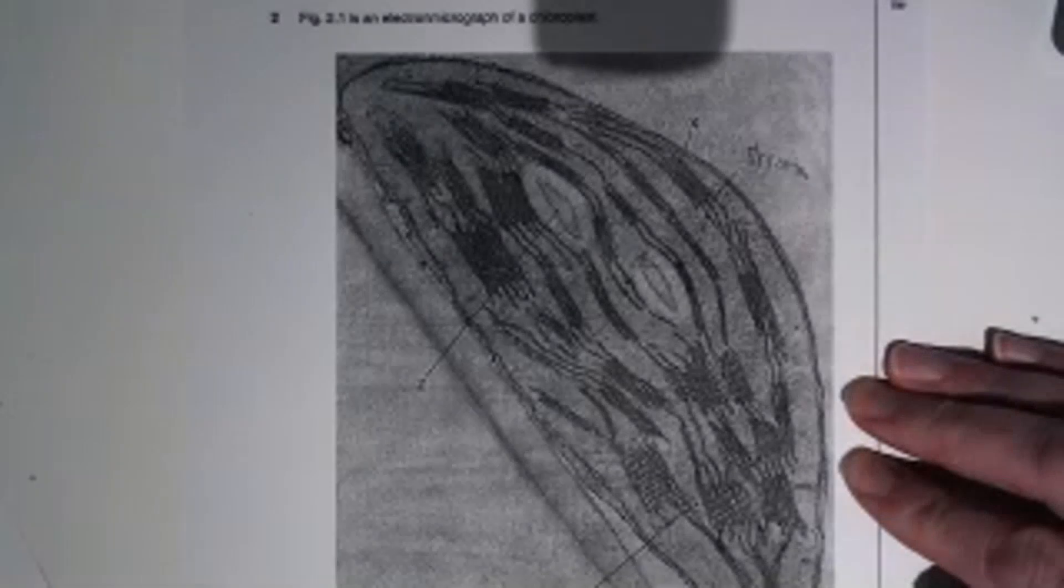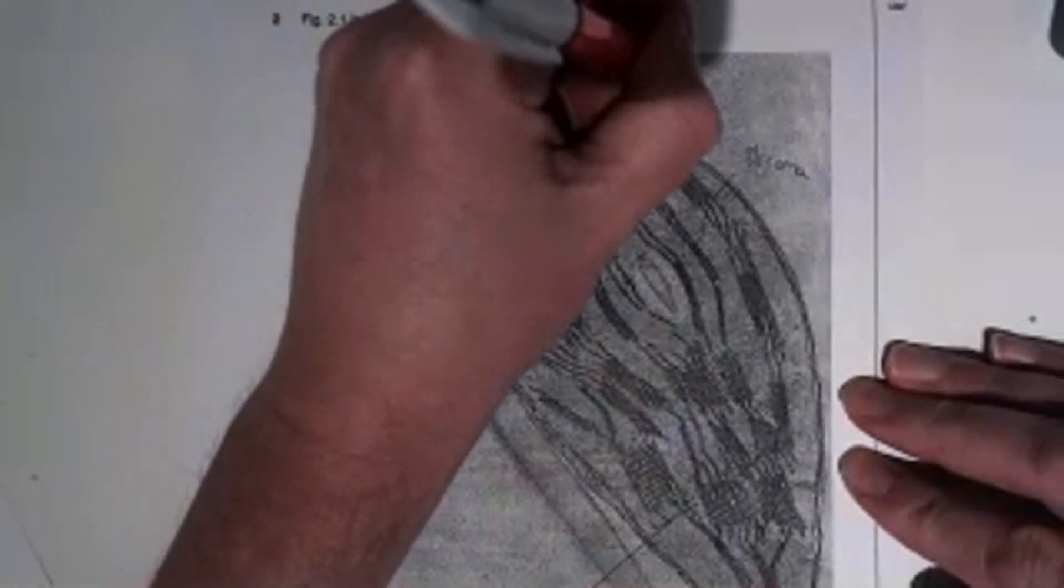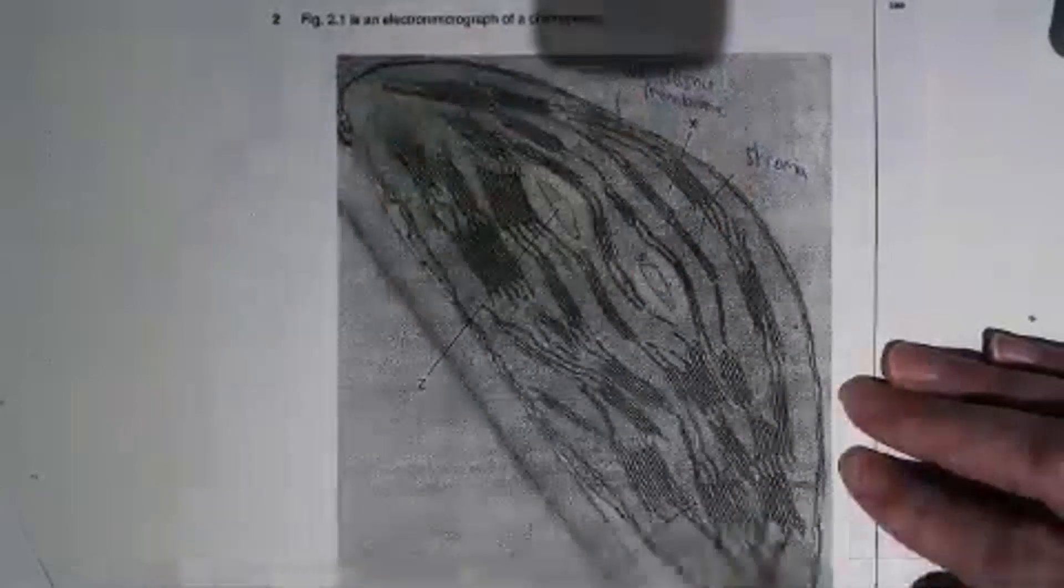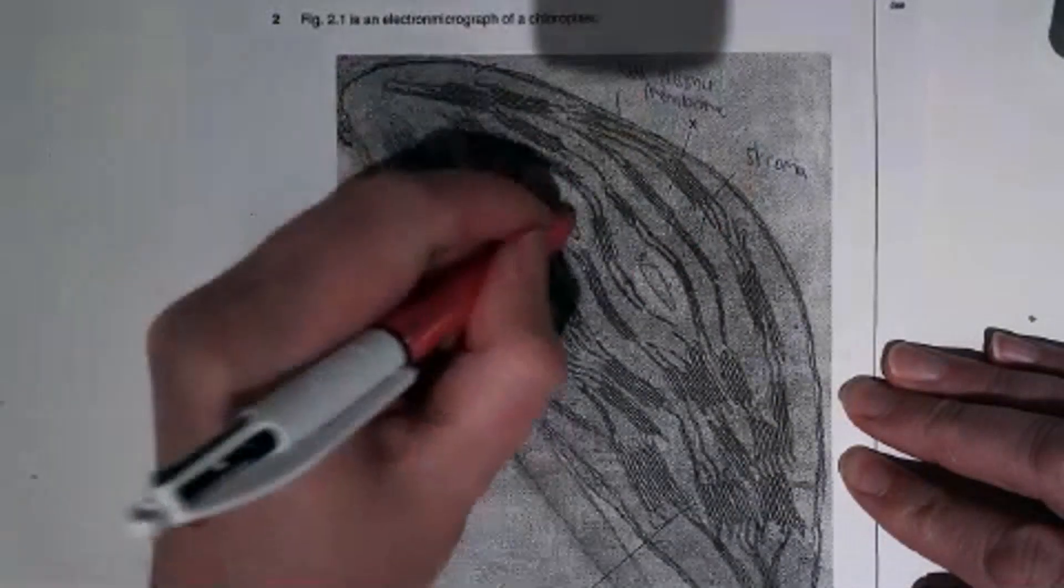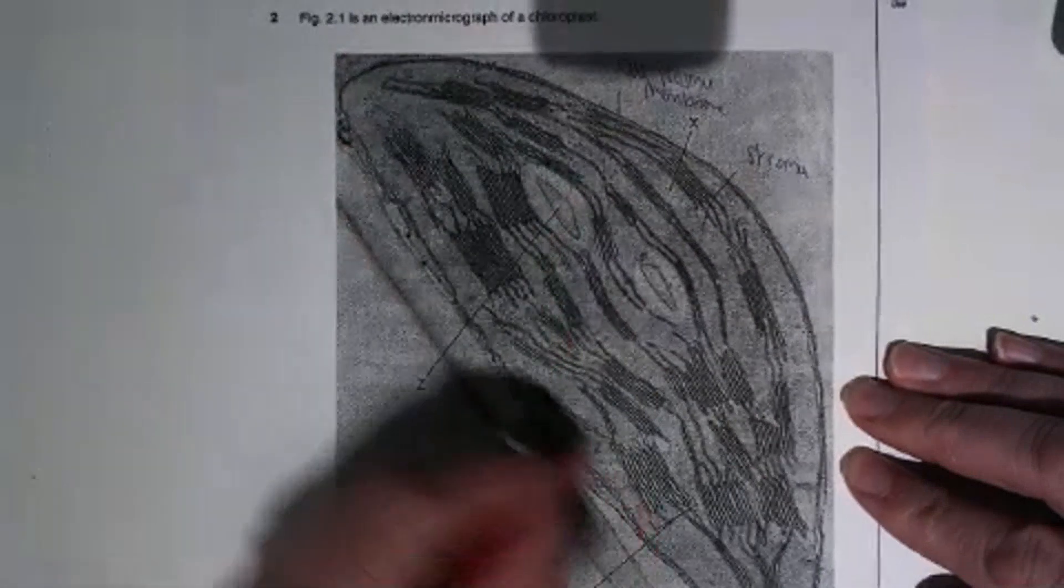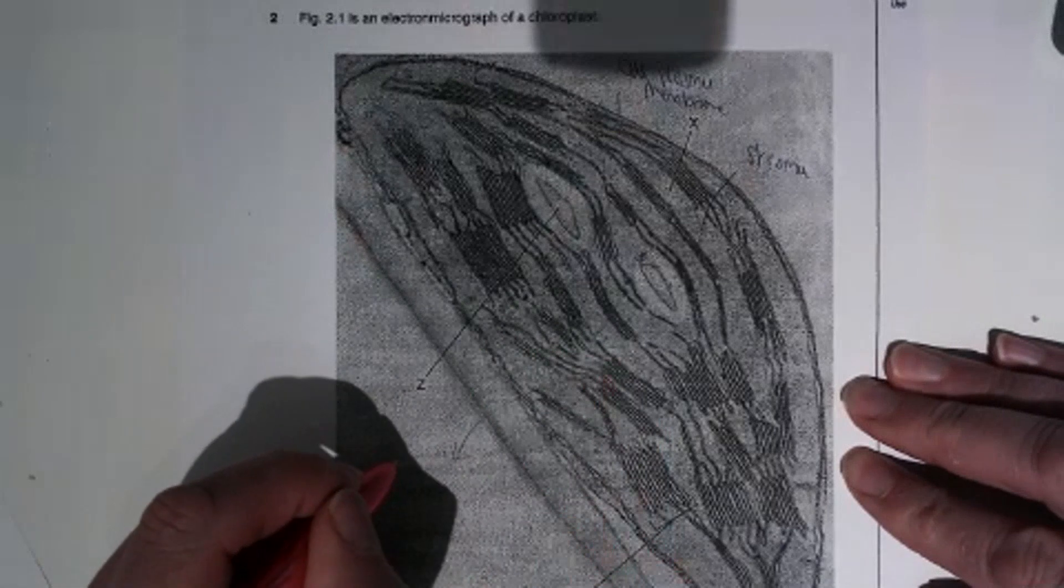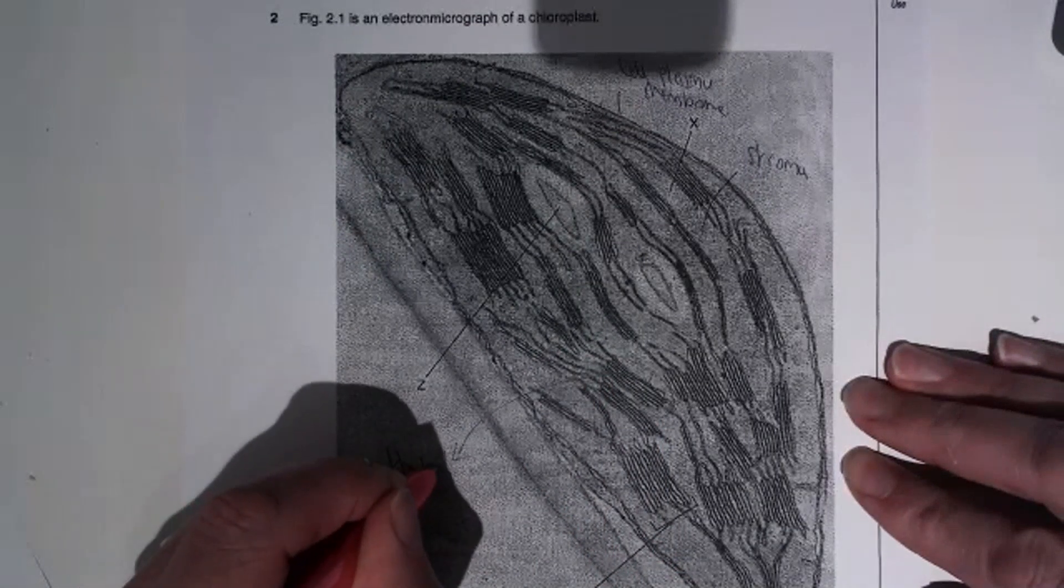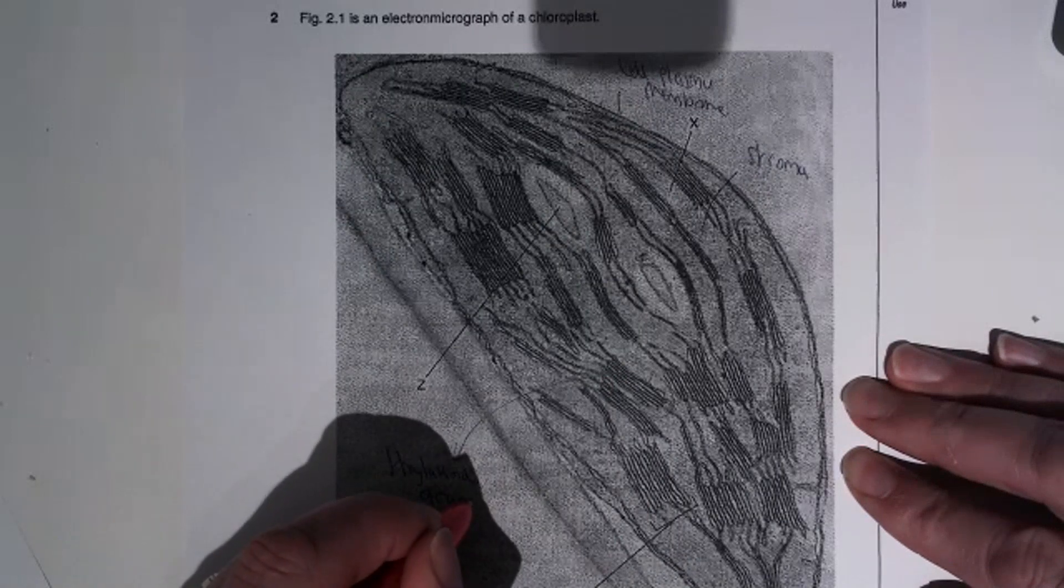On the inside of the chloroplast we've got a cell plasma membrane, which is a double membrane on the outside of the chloroplast. We've got these structures here which are called thylakoids individually, but as a stack, the granum.